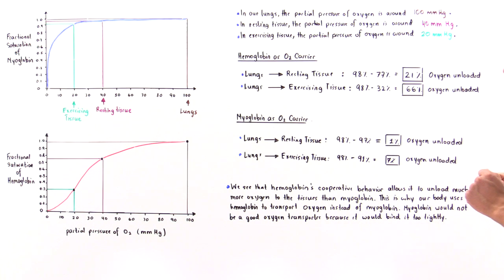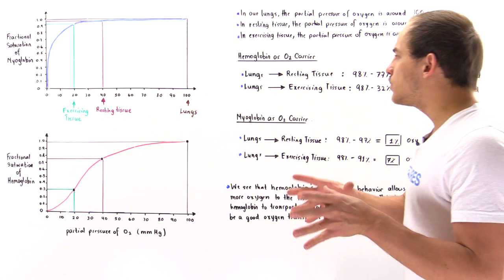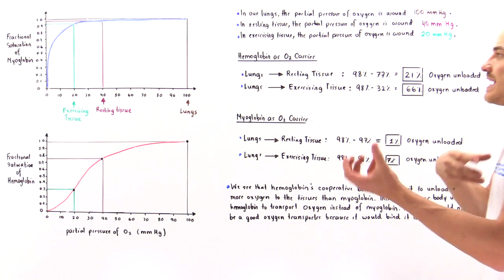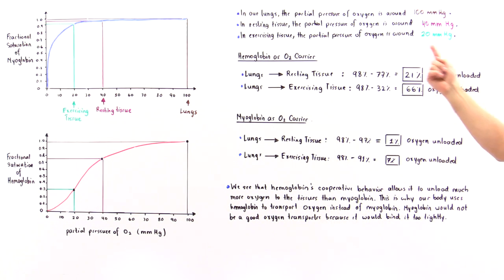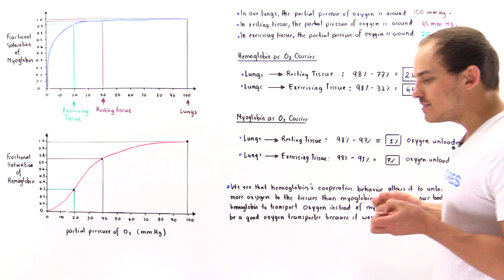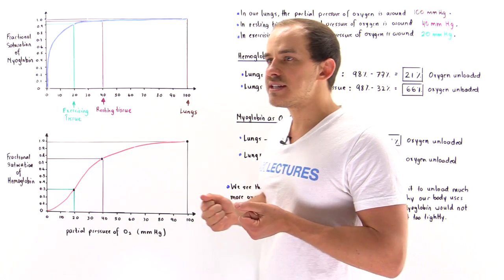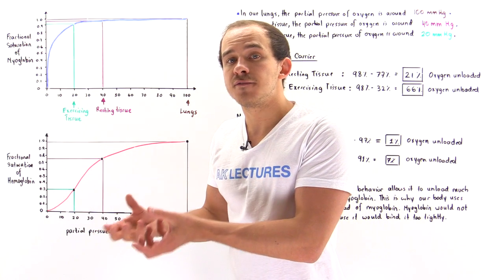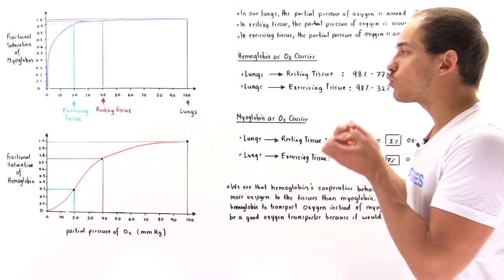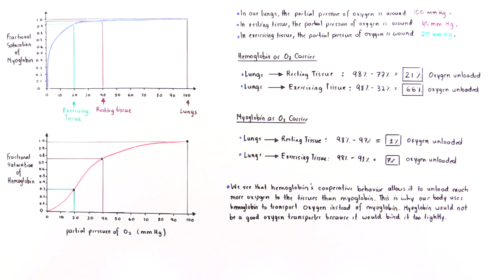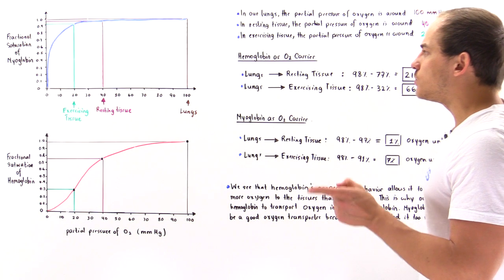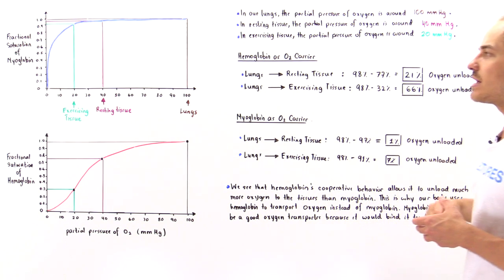When the hemoglobin goes from the lungs to the resting tissue, there is a difference of about 21%, meaning 21% of that hemoglobin has successfully unloaded and released oxygen to the resting cells of our body. This is how much oxygen can be unloaded by hemoglobin when it goes from the lungs to the resting tissue.